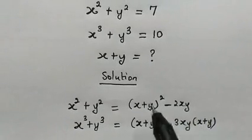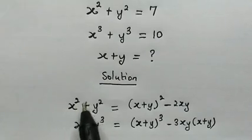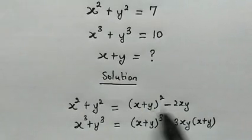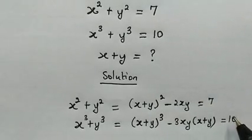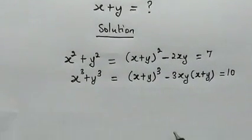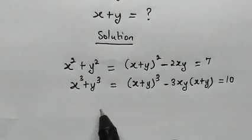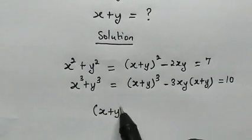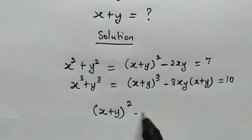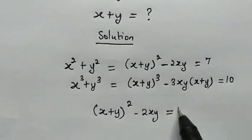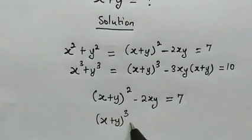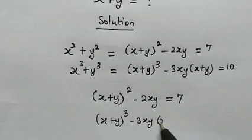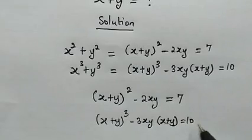From the original problem, we know that x squared plus y squared is equal to 7, and x cubed plus y cubed is equal to 10. So the right-hand side of the first identity equals 7, and the right-hand side of the second equals 10. Our target is to find the value of x plus y. So we have: x plus y squared minus 2xy equals 7, and x plus y cubed minus 3xy times x plus y equals 10.